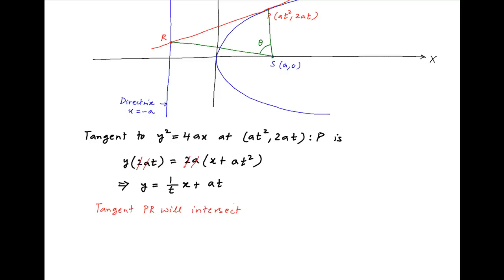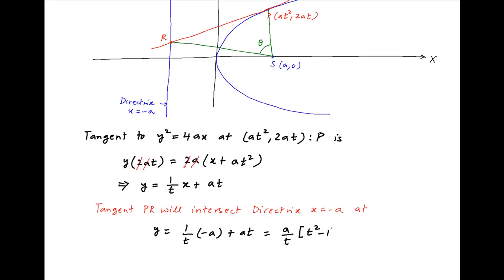The tangent PR intersects the directrix x = −a at point R. Substituting x = −a into the tangent equation gives y = (1/t)(−a + at) = (a/t)(t² − 1). Therefore, the coordinates of point R are (−a, (a/t)(t² − 1)).